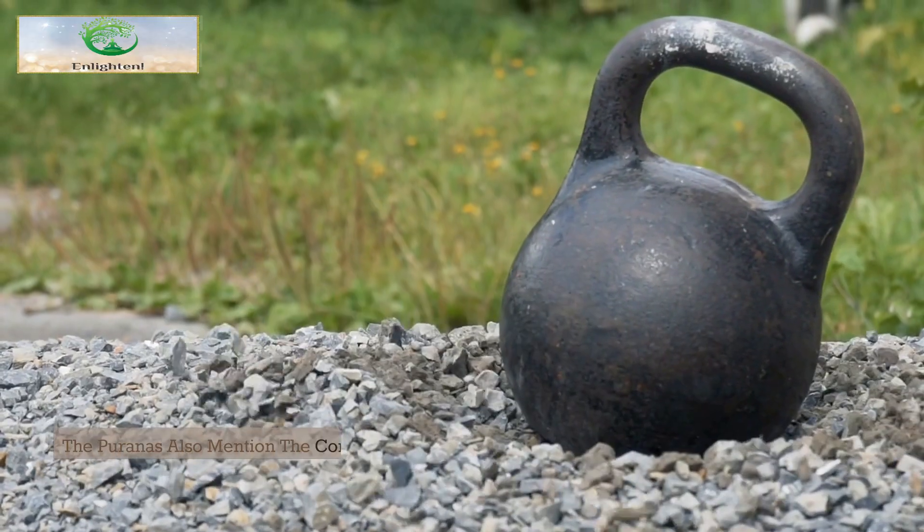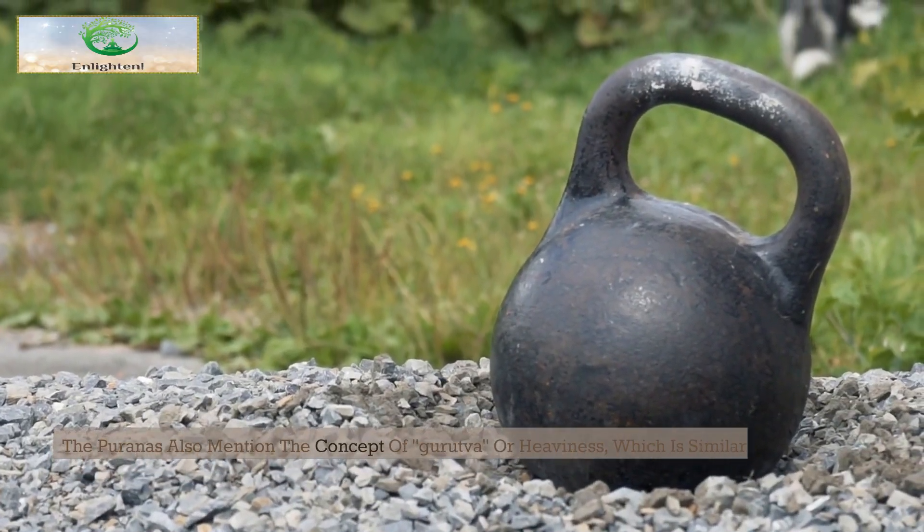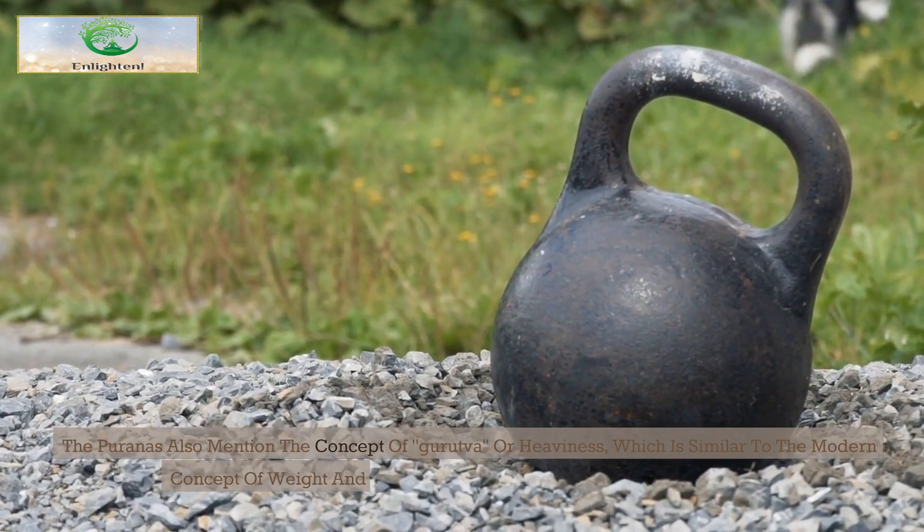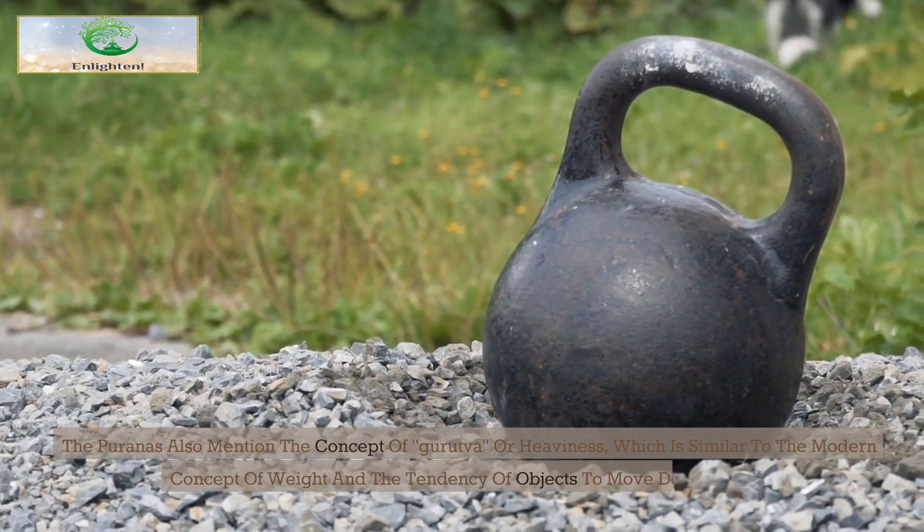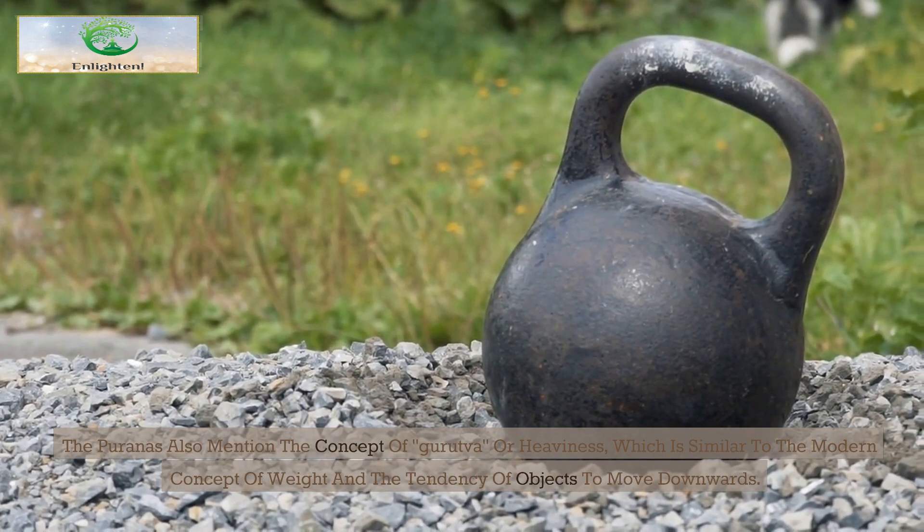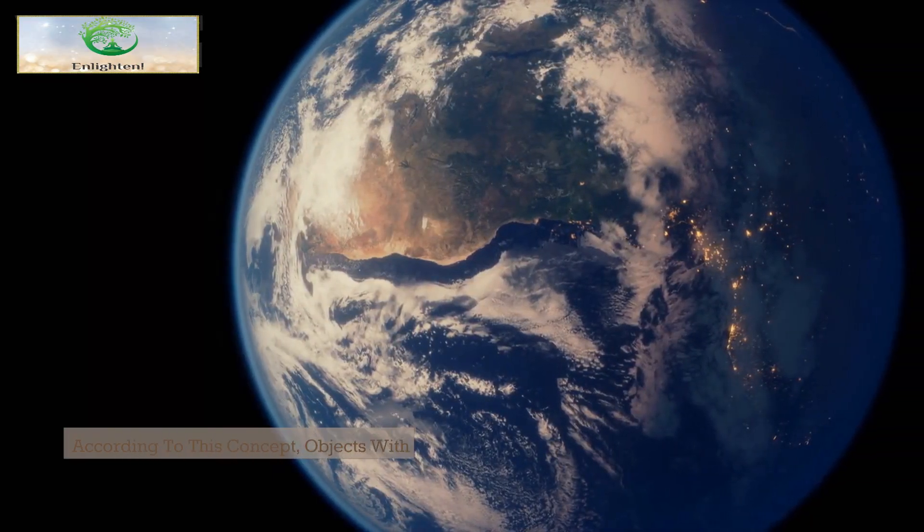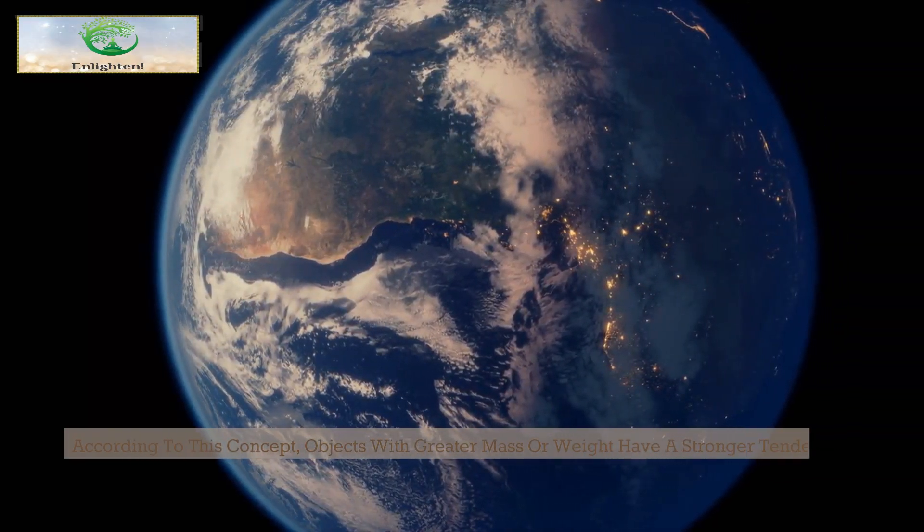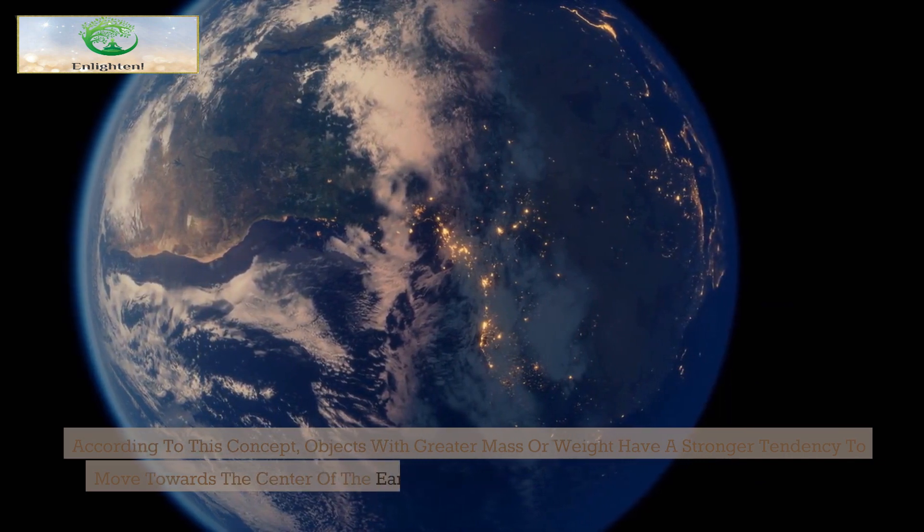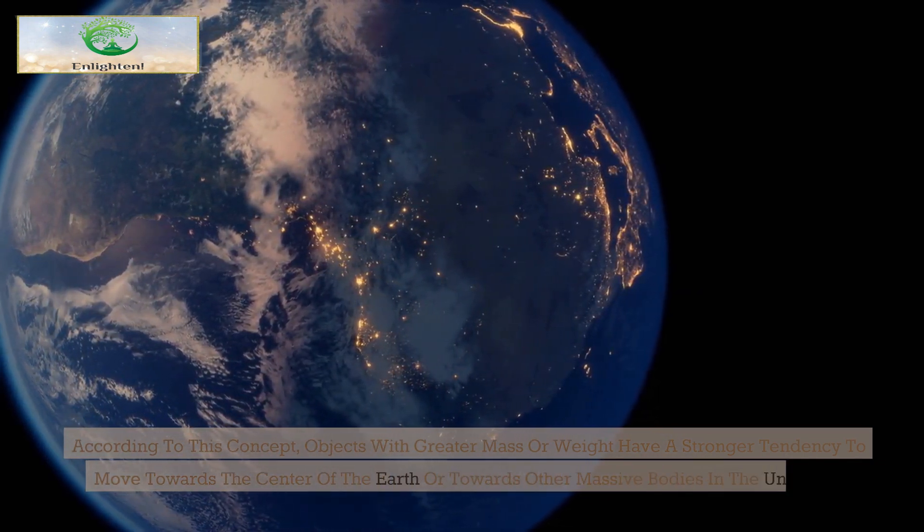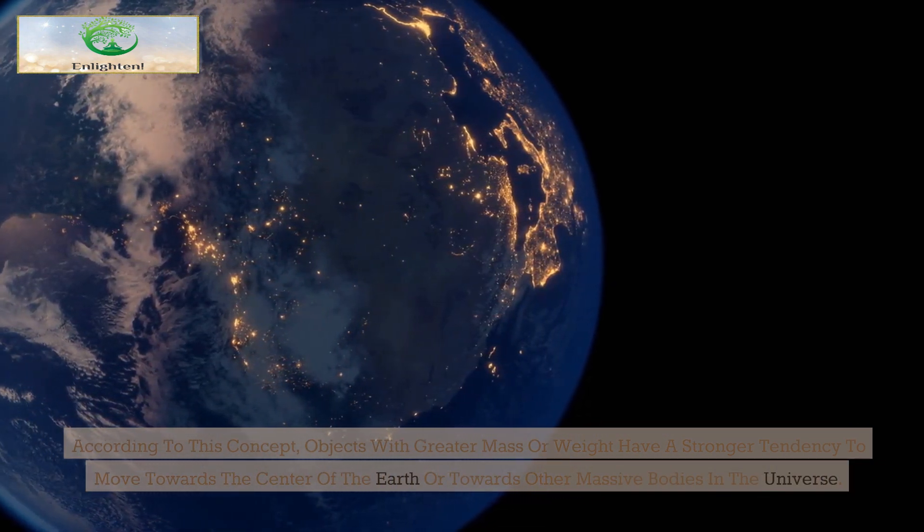The Puranas also mention the concept of graha or heaviness, which is similar to the modern concept of weight and the tendency of objects to move downwards. According to this concept, objects with greater mass or weight have a stronger tendency to move towards the center of the earth or towards other massive bodies in the universe.